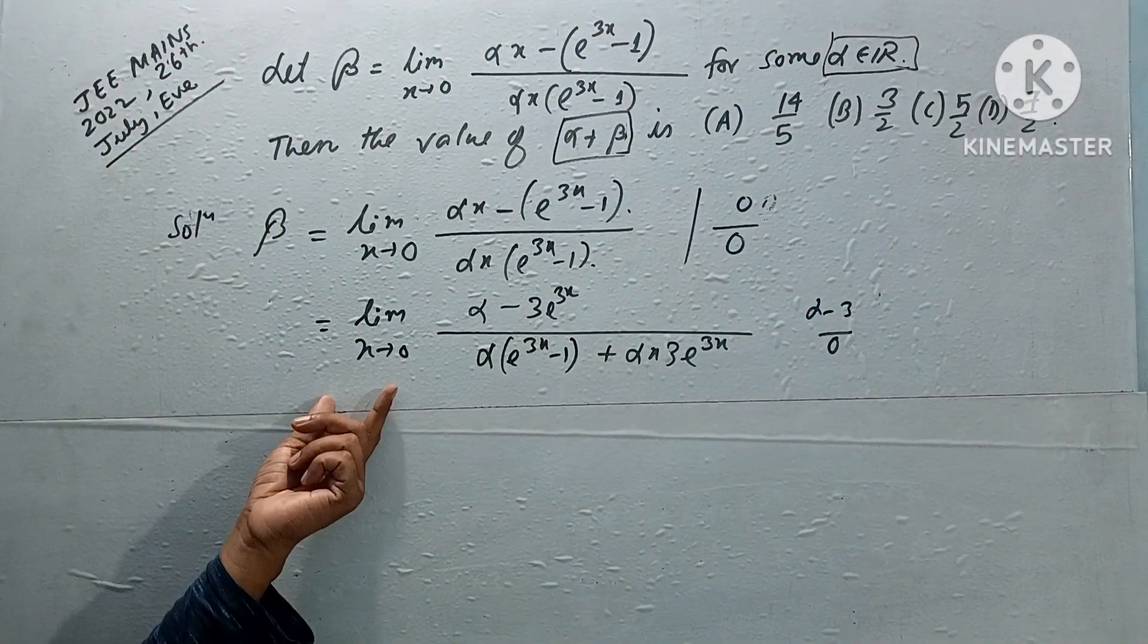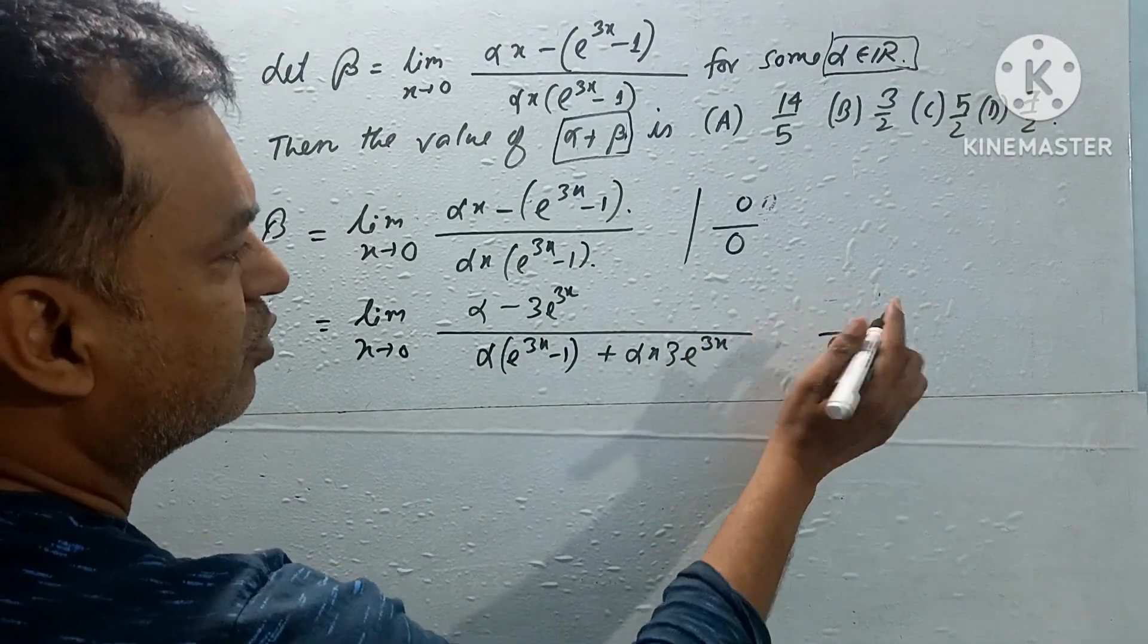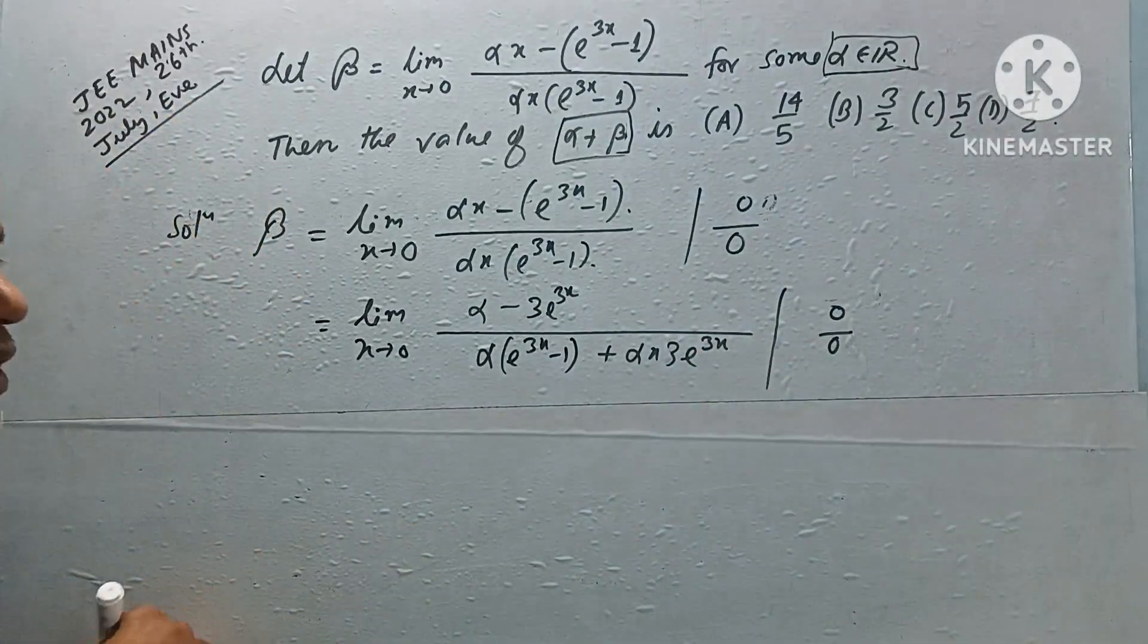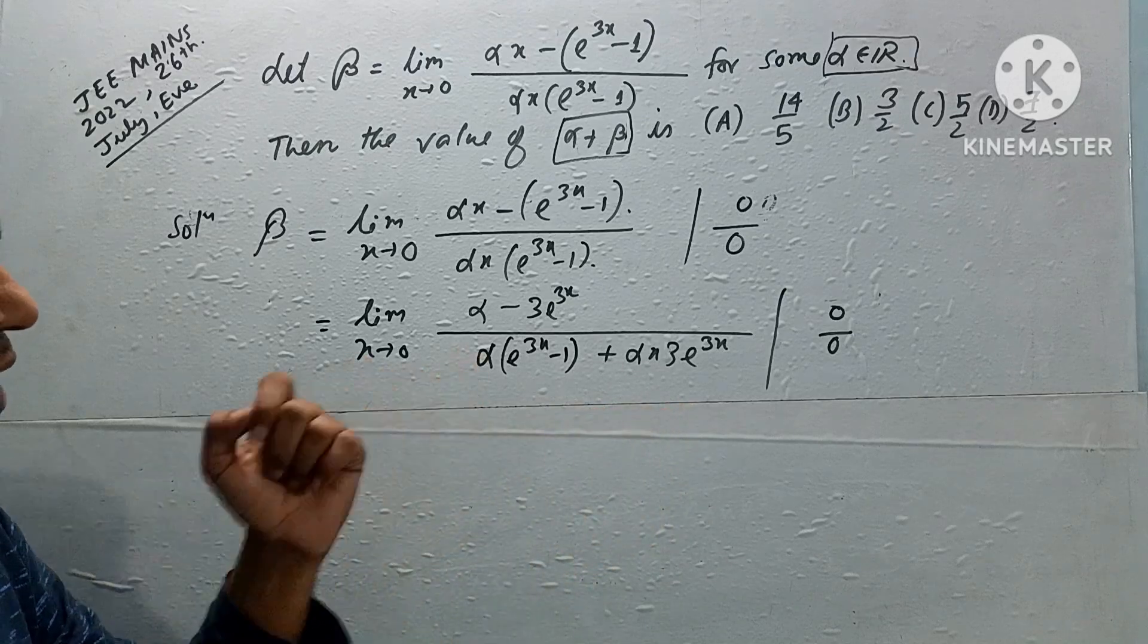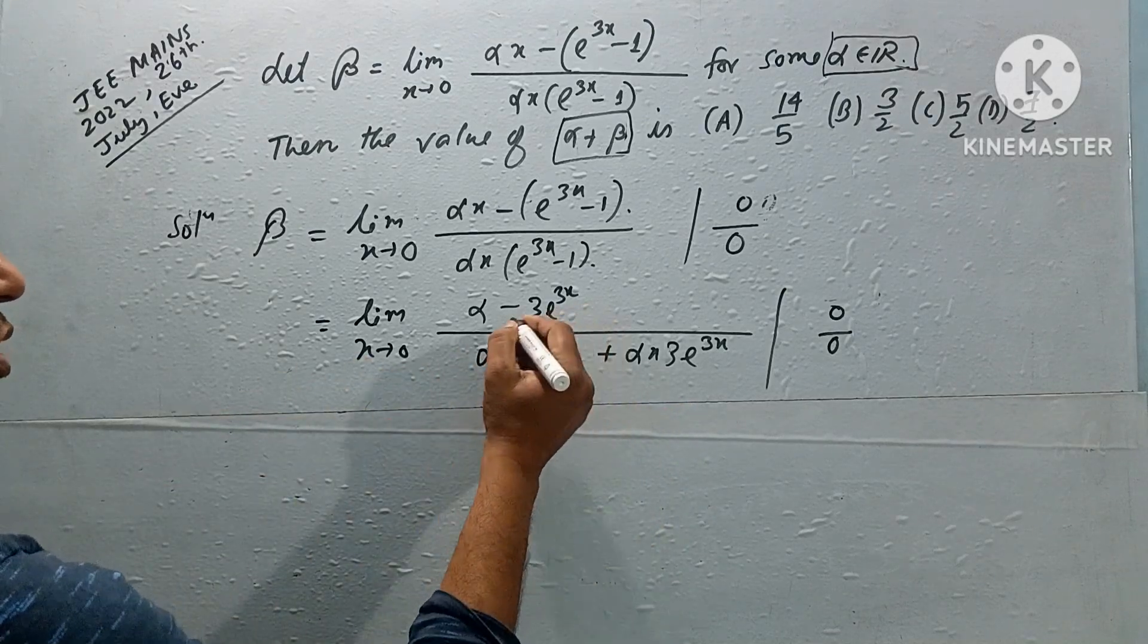This will give a finite value only if the numerator is also zero, making it zero by zero indeterminate form again. For a finite value, this must happen.